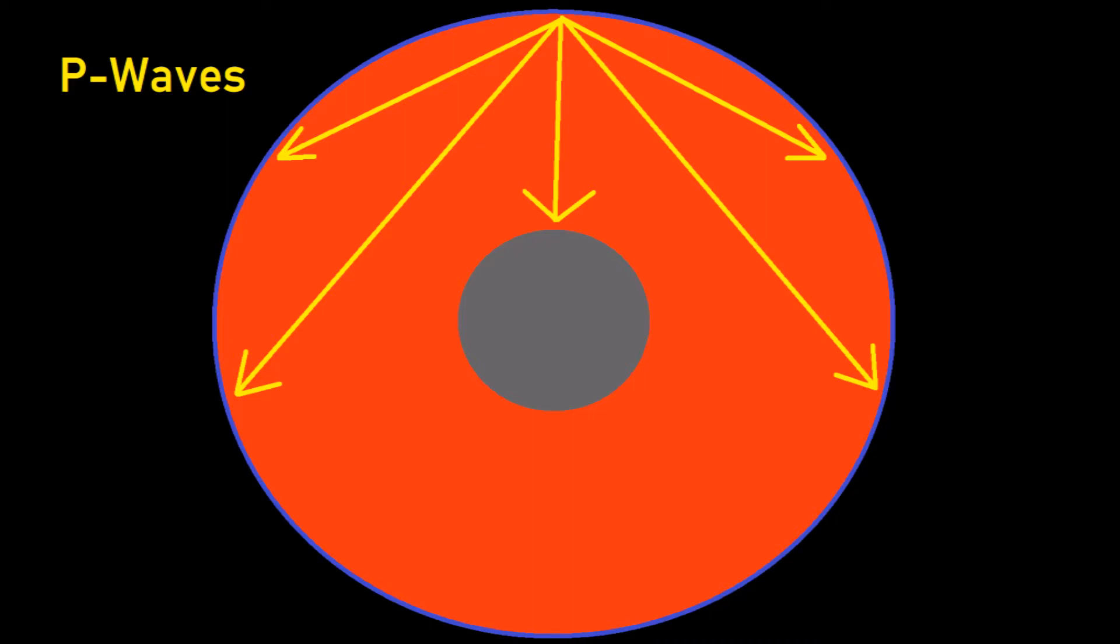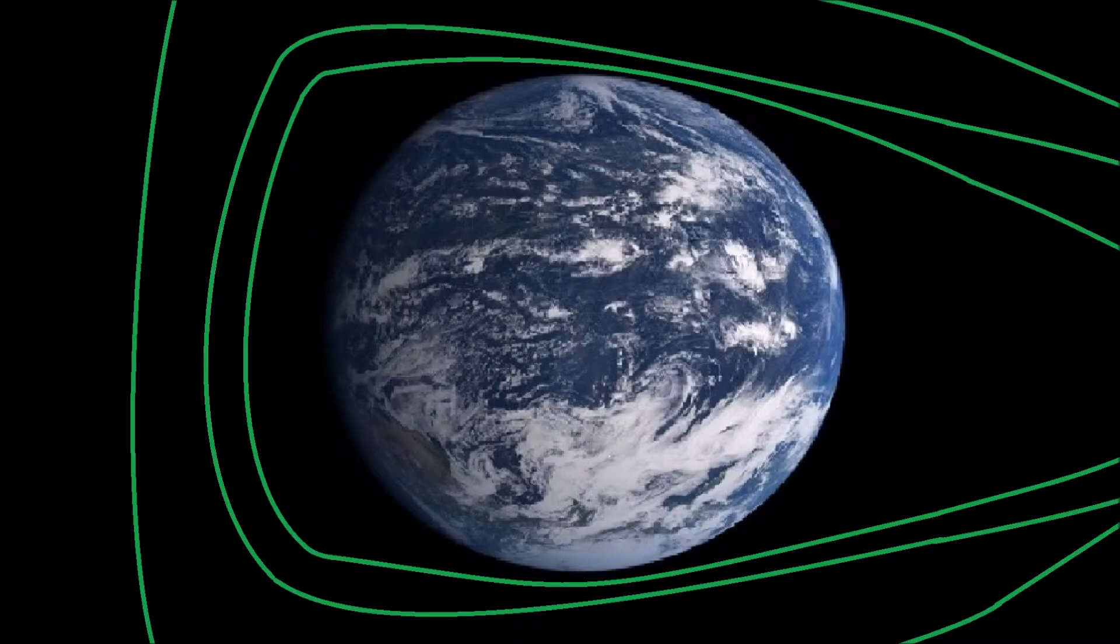the density of this obstruction is close to the density of iron. So an iron core explains this obstruction, and it also helps to explain why Earth has a magnetic field.